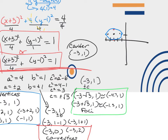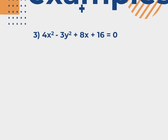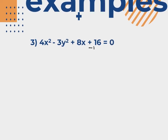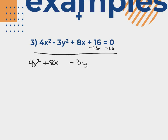Now we'll do an example of completing the square for the hyperbola. Remember, the hyperbola equation has a subtraction sign in between. Notice this equation has both an x squared and a y squared, and one of the squared variables has a negative sign in front — that's a clue your final answer will be a hyperbola. The only thing we need to move to the right side is the constant. Put your x terms side by side, your y terms side by side, and set it equal to negative 16.